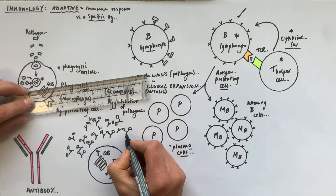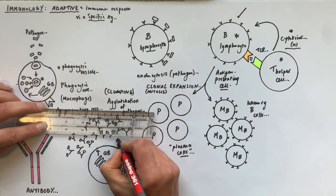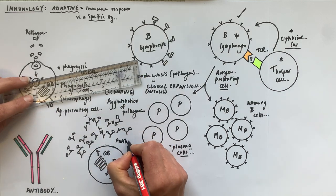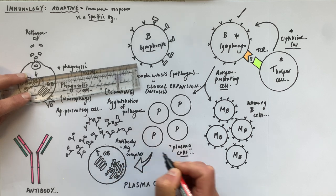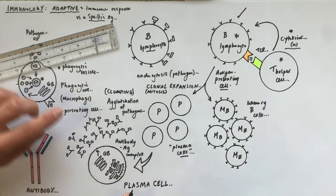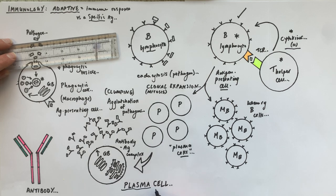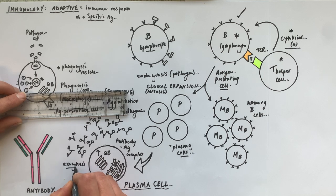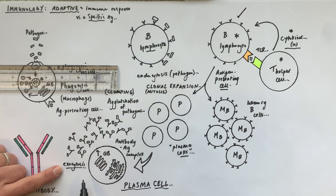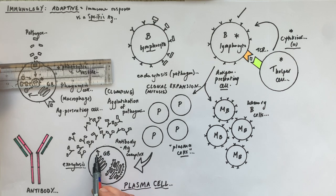The antibody binds specifically to an antigen because they're complementary in shape — this is called an antibody-antigen complex. The secretion of the antibody from the plasma cell is called exocytosis, which requires ATP and is a very active process. It requires the rough endoplasmic reticulum to interact with the Golgi body via the secretory pathway and secretory vesicles.